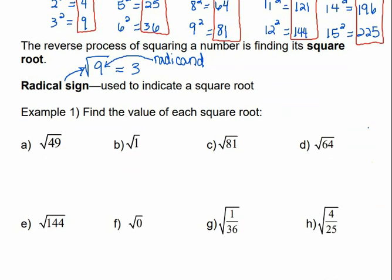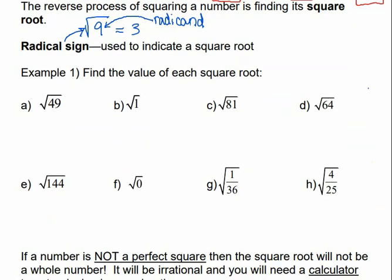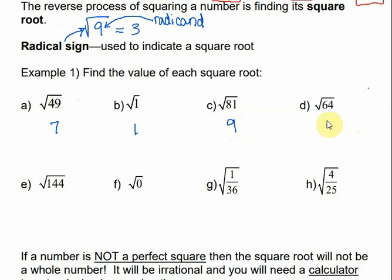So let's practice finding the values of the square roots. We're asking ourselves, what number can we multiply times itself to get that number? What can we multiply times itself to get 49? The square root of 49 is 7. The square root of 1 is 1, because 1 times 1 is 1. The square root of 81 is 9. The square root of 64 is 8. The square root of 144 is 12.